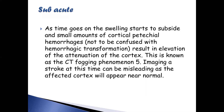As time goes on, the swelling starts to subside, and small amounts of cortical petechial hemorrhages — which should not be confused with hemorrhagic transformation — result in elevation of the attenuation of the cortex. This is called the CT fogging phenomenon. Since hemorrhage appears hyperdense (lighter), this can be confused with hemorrhagic transformation. If you image a stroke at this time it can be misleading, as it may look like hemorrhagic stroke when it was actually ischemic.